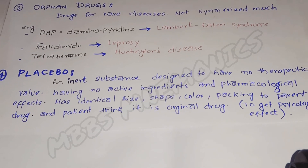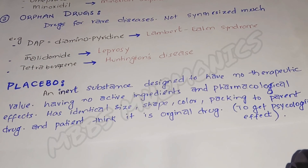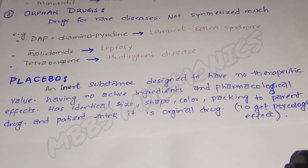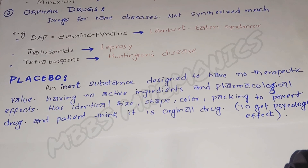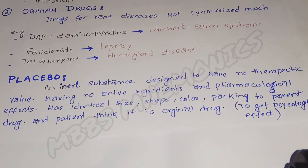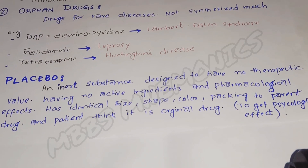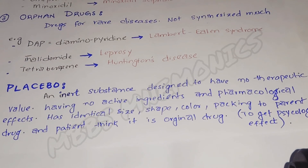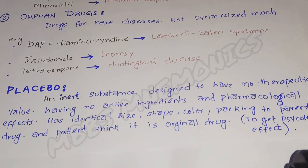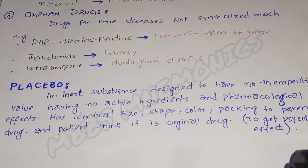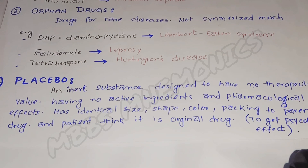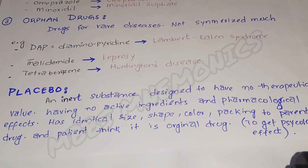Examples include pure placebo and impure placebo. Pure placebo has no convincing pharmacological effects — for example, a sugar pill, saline, or glucose injection. Impure or active placebo has the potential to produce some pharmacological effects, such as vitamin B complex or iron preparation tablets included in a pack of oral contraceptive pills. The placebo doesn't have its own name but bears the name of the drug for which it is prepared.